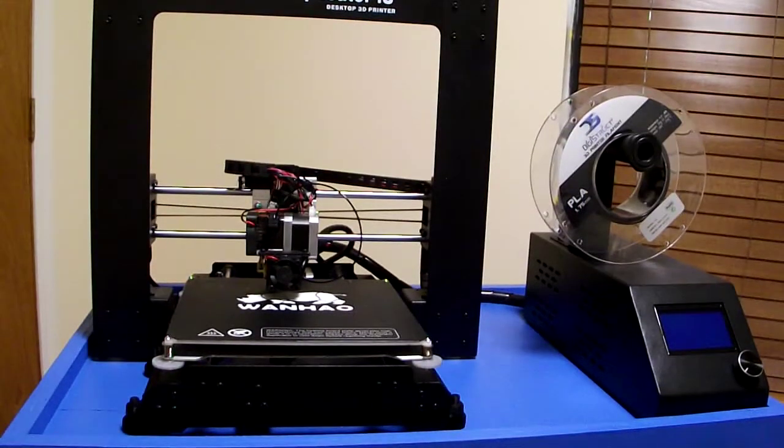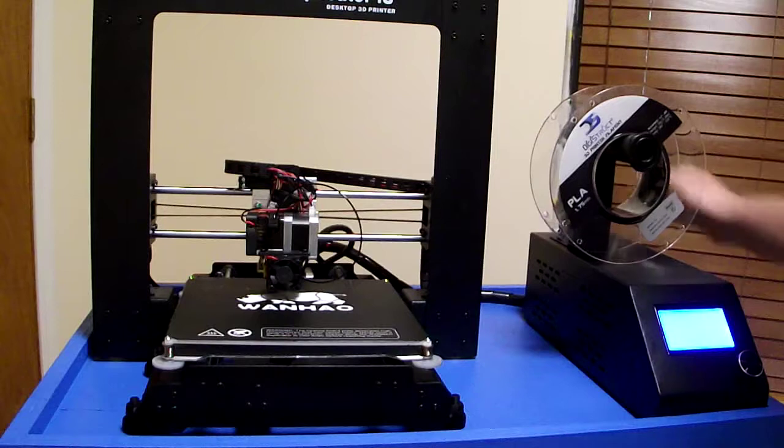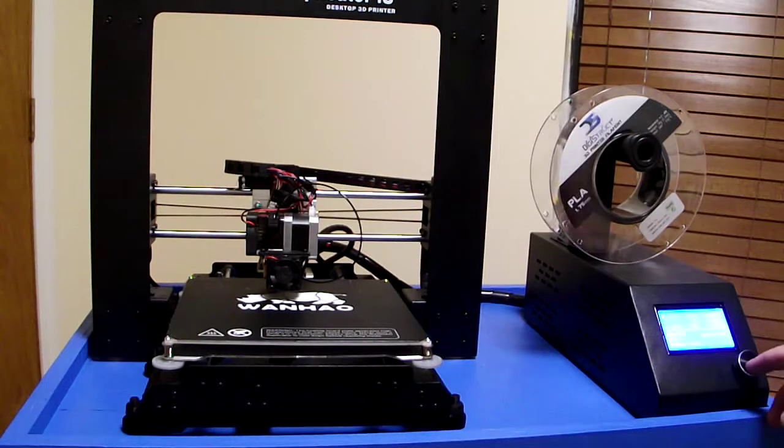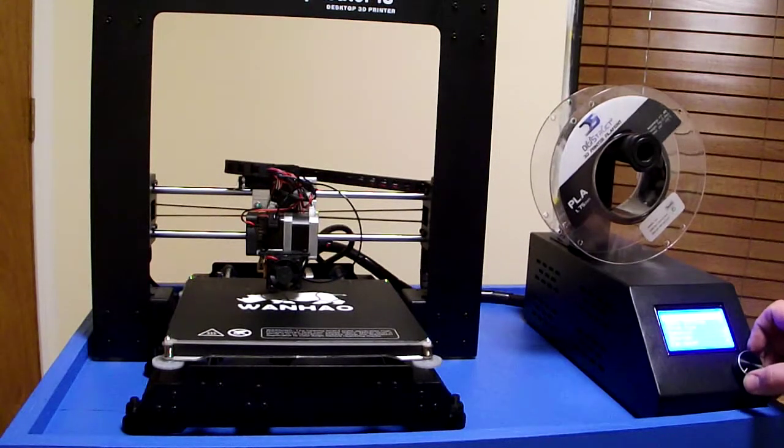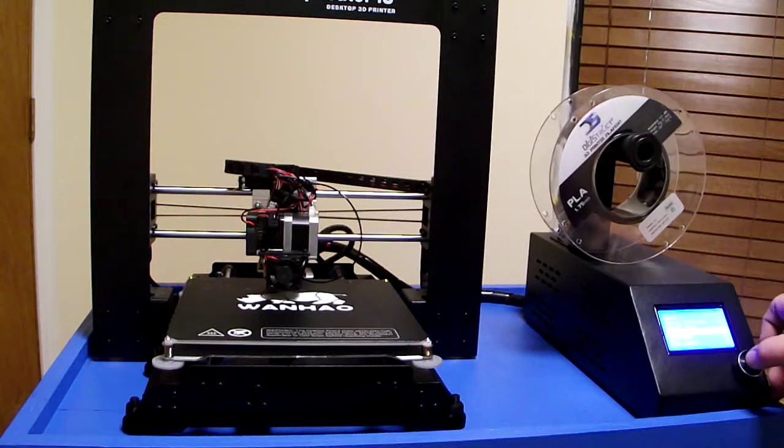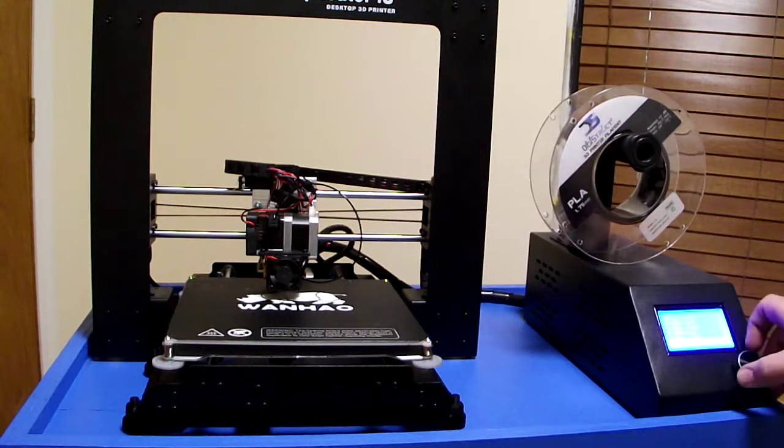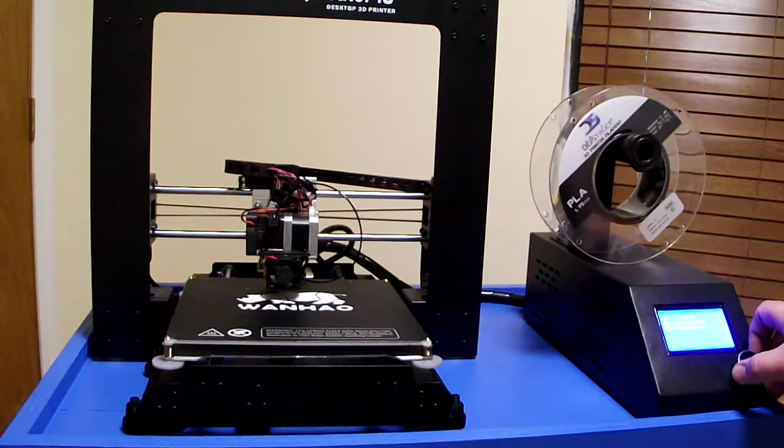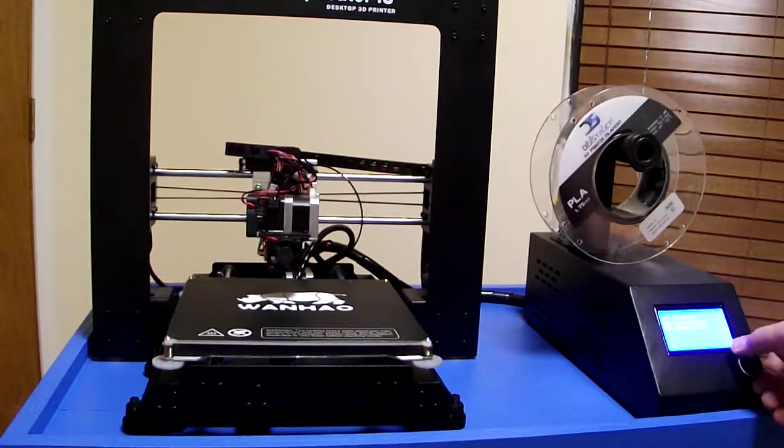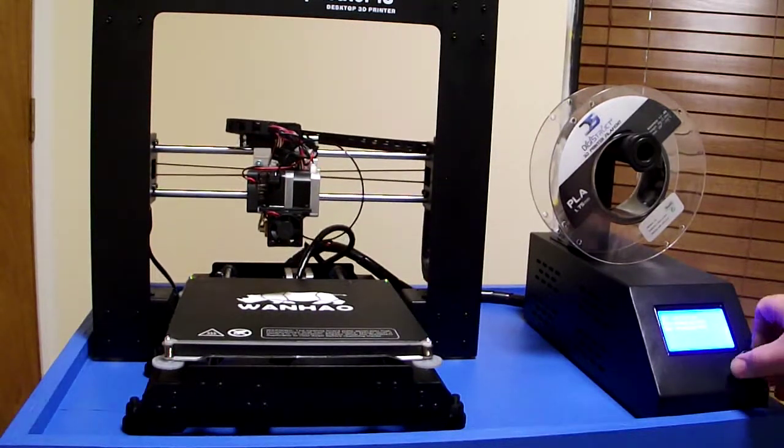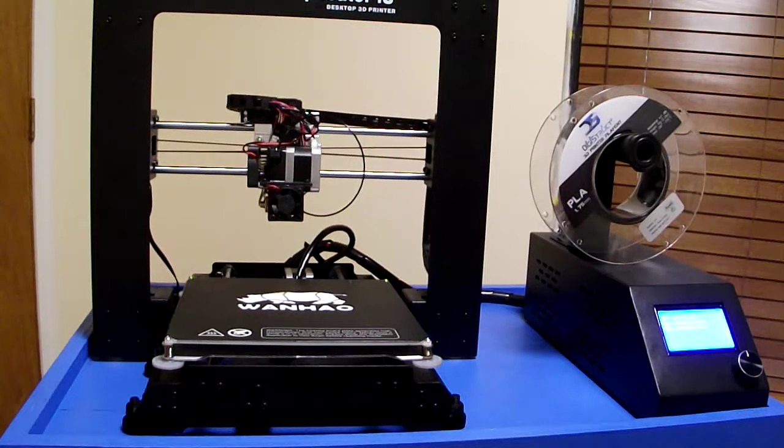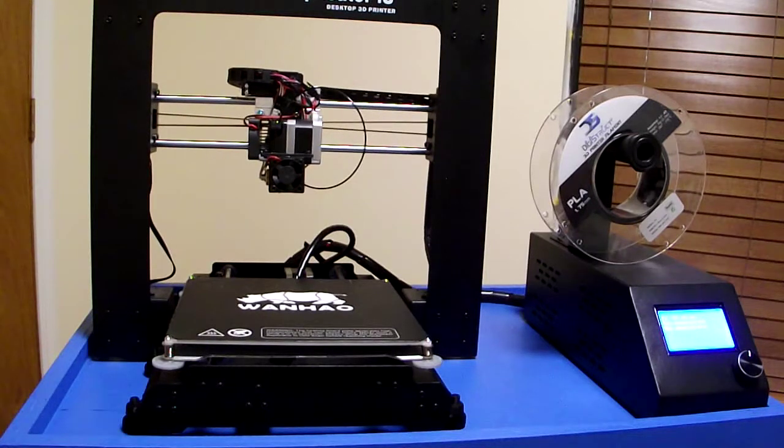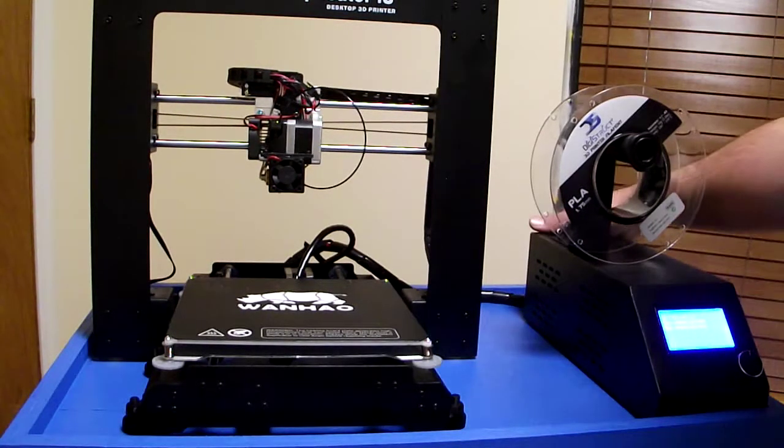The first thing I'll need to do is raise the z-axis out of the way so that I can remove the build platform. I'll do this by going to position and z-position fast. That should be enough. Now I can power down the Wanhao.